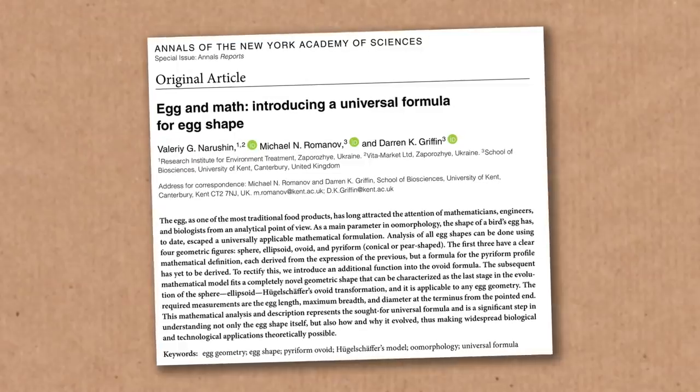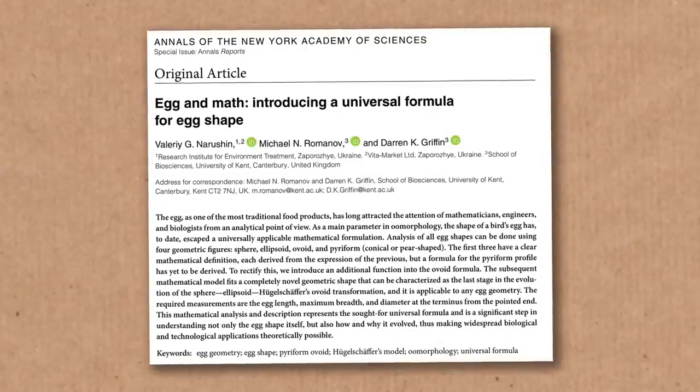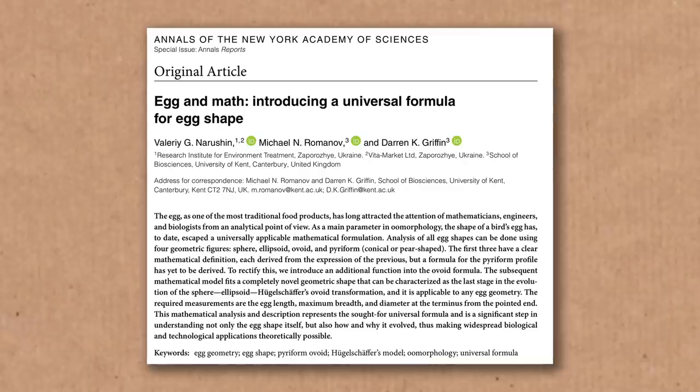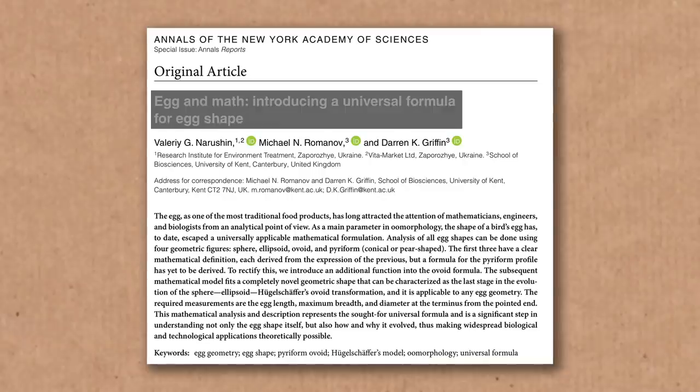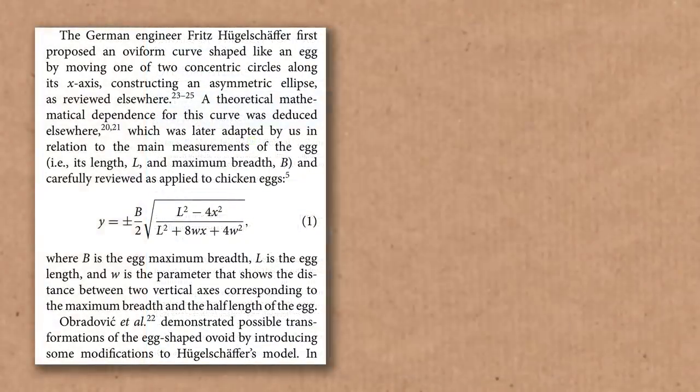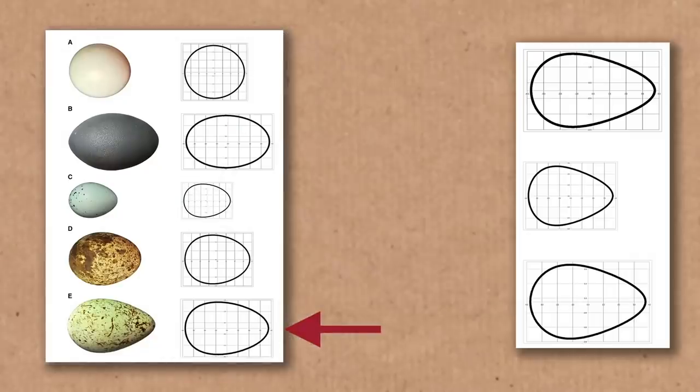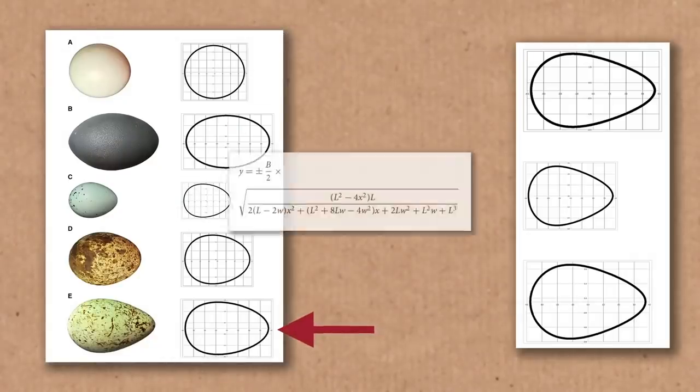If you'd like to go even deeper into the mathematics behind egg shapes, this reasonably recent paper may be of interest. They were chasing a universal formula for egg shape. Now for chicken eggs, it looks like this. But for more pear-shaped, so-called pyriform eggs, you need this one.